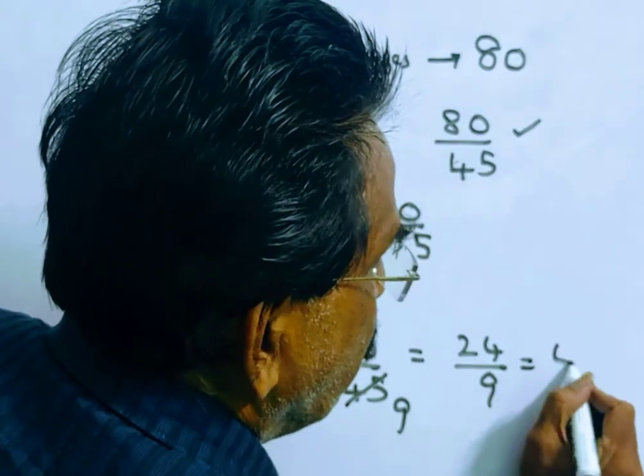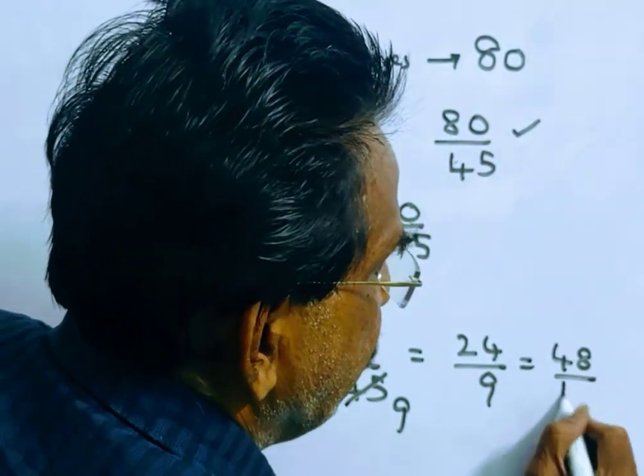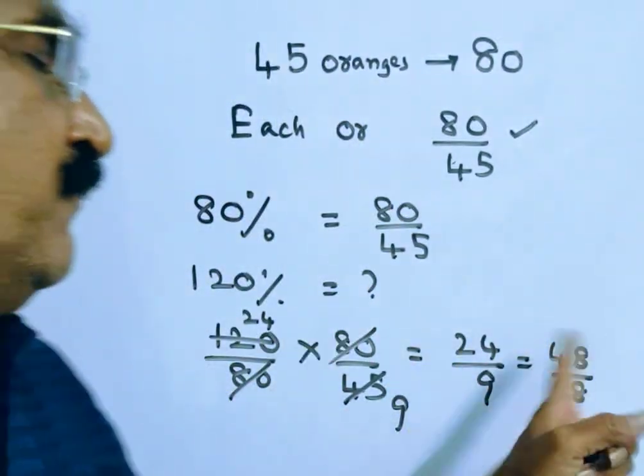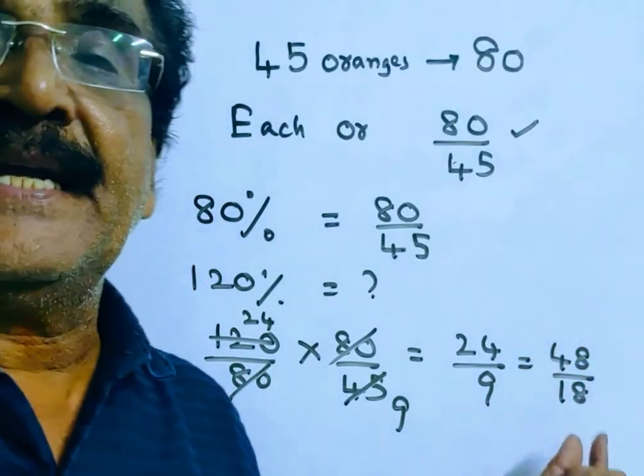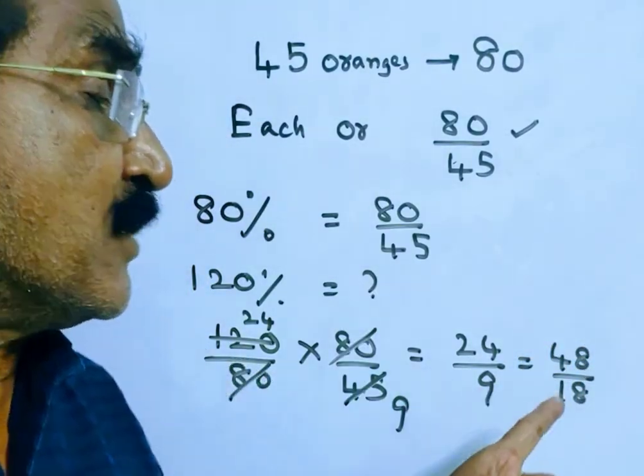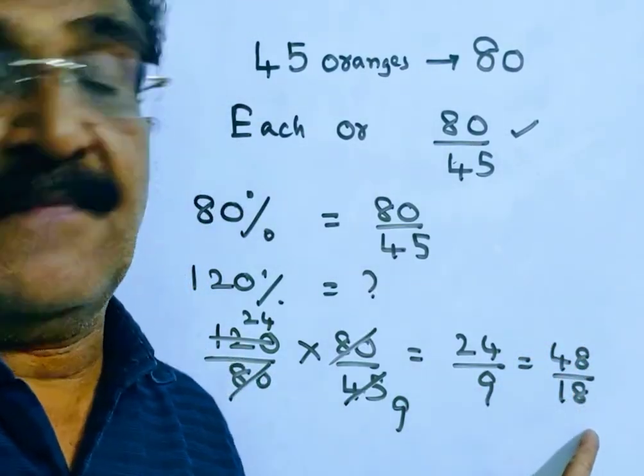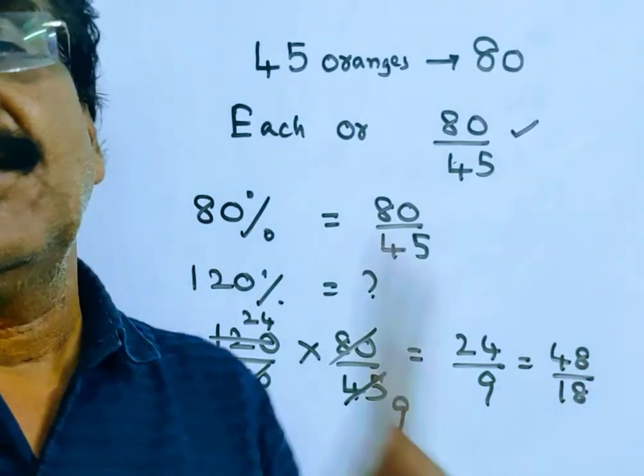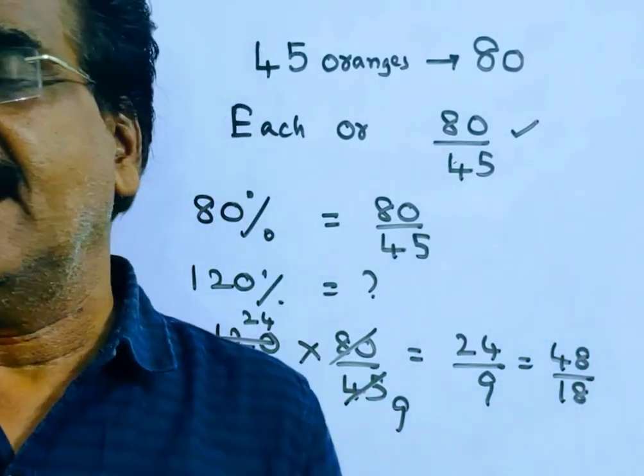This is equal to 48 by 18. 48 by 18 into 24 by 9. That means he has to sell 18 oranges for Rs. 48 to gain 20%. Thank you friends.